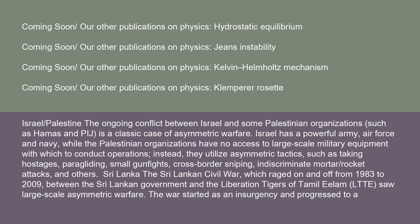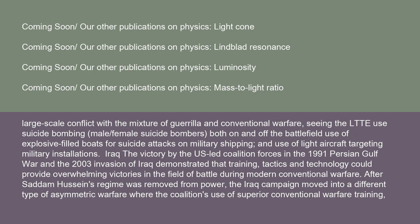The Sri Lankan Civil War, which raged from 1983 to 2009 between the Sri Lankan government and the Liberation Tigers of Tamil Eelam (LTTE), saw large-scale asymmetric warfare. The war started as an insurgency and progressed to a large-scale conflict with a mixture of guerrilla and conventional warfare, seeing the LTTE use suicide bombing, male and female suicide bombers, explosive-filled boats for suicide attacks on military shipping, and light aircraft targeting military installations.